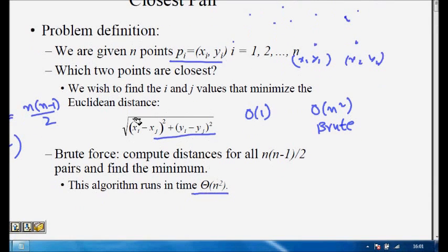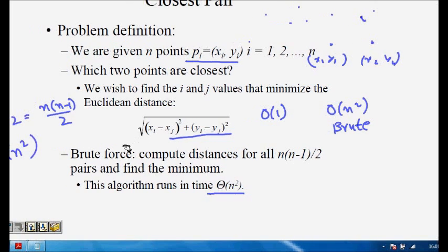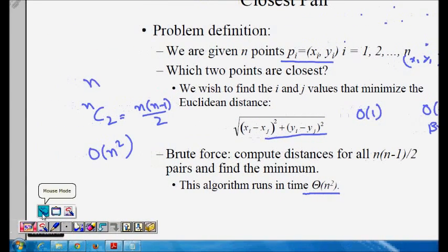This will be Θ(n²), but what if we have to find something better? In algorithms we always try to do something better. Before going to the two-dimensional problem, let's see what will happen if we try to solve this problem for a single dimensional case.